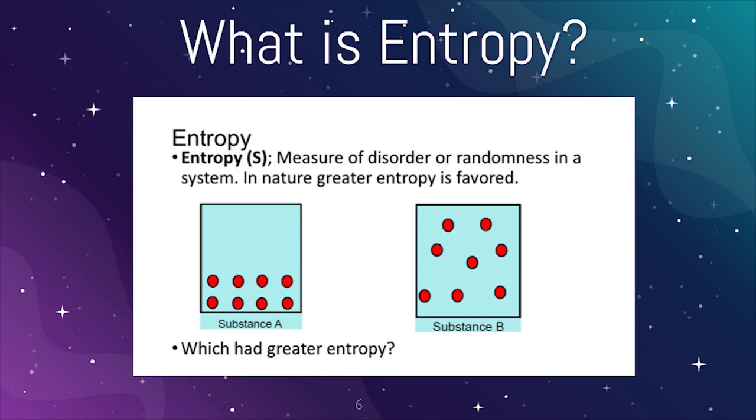Now pause the video right here and comment down below what you think of which substance has more entropy. The answer is substance B. As you can see, it clearly is more random than substance A.